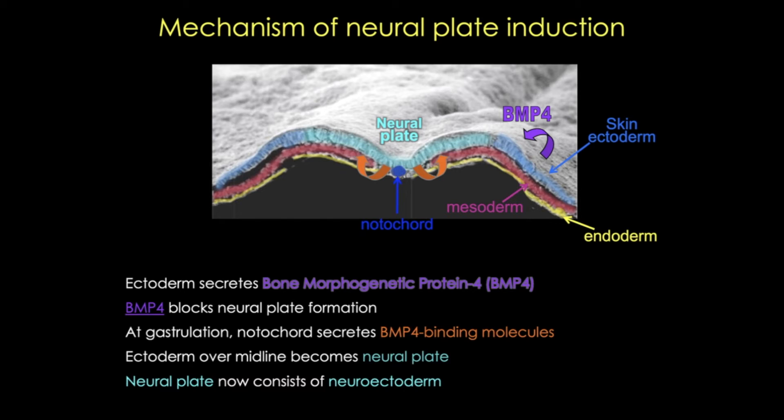This whole process is called neural induction, which is actually kind of a misnomer because we know now that neural tissue is the default tissue. It's not actually induced. Other ectoderm is actively blocked from forming it. Now we have a flat plate of neuroectodermal tissue fated to become nervous tissue. But now, we're going to have to take that flat plate of tissue. It's going to undergo morphogenetic movements where the neural folds are going to roll up into a tube, which will seal off and eventually move inside the body.